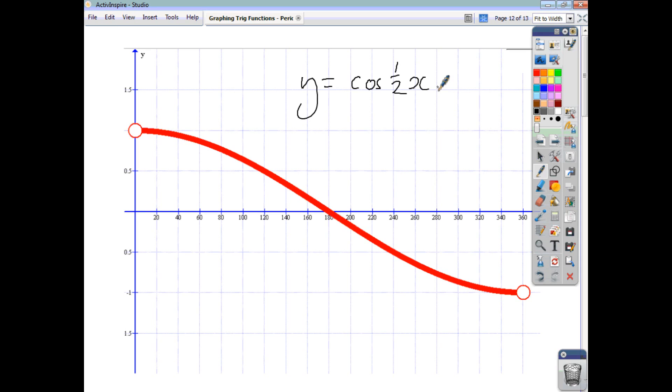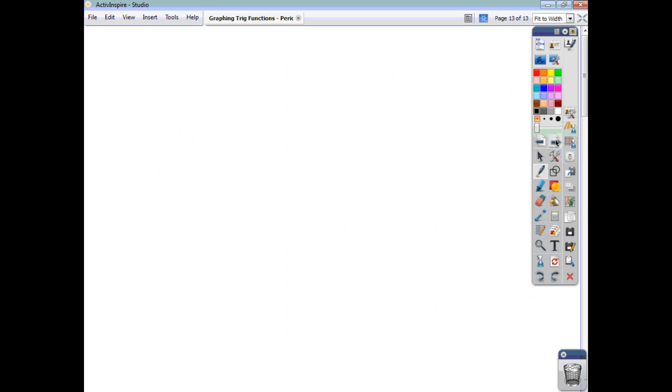So, I hope that was helpful. And I hope you can see that whatever number comes before x in your trig equation is what tells you how many cycles you have in 360 degrees. And you can work out the period of your function by taking that number or by dividing 360 by that number. So, I hope that was helpful.